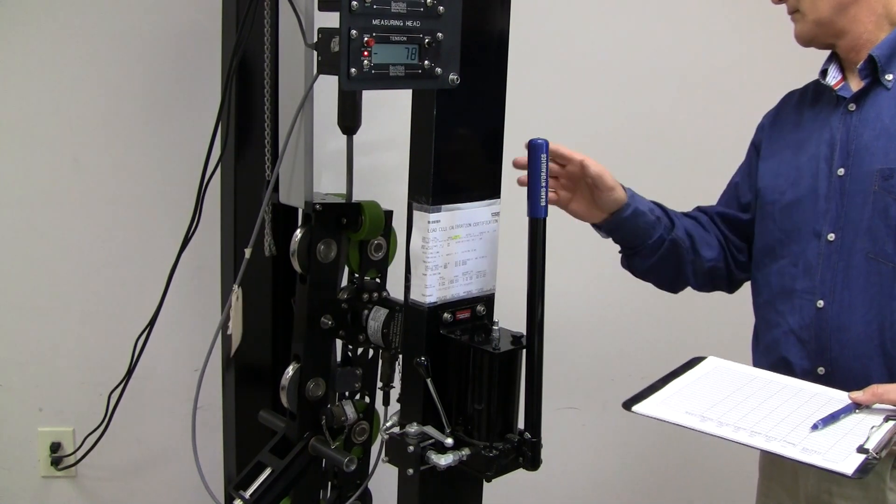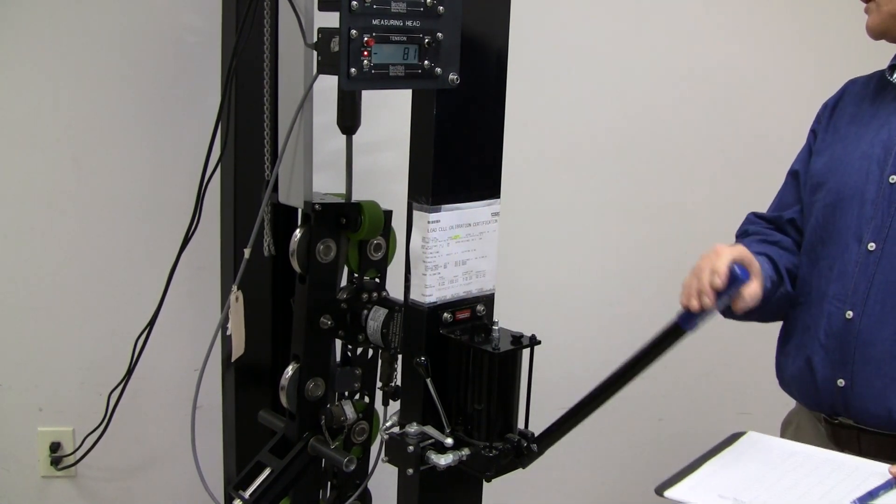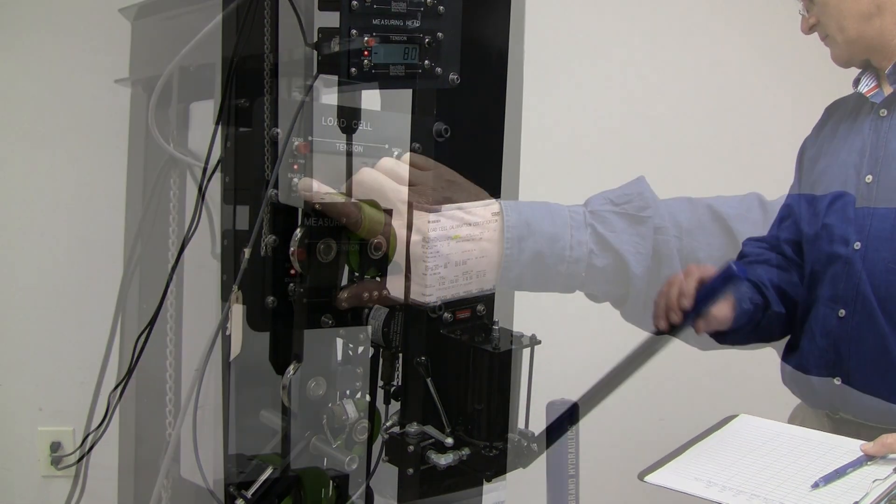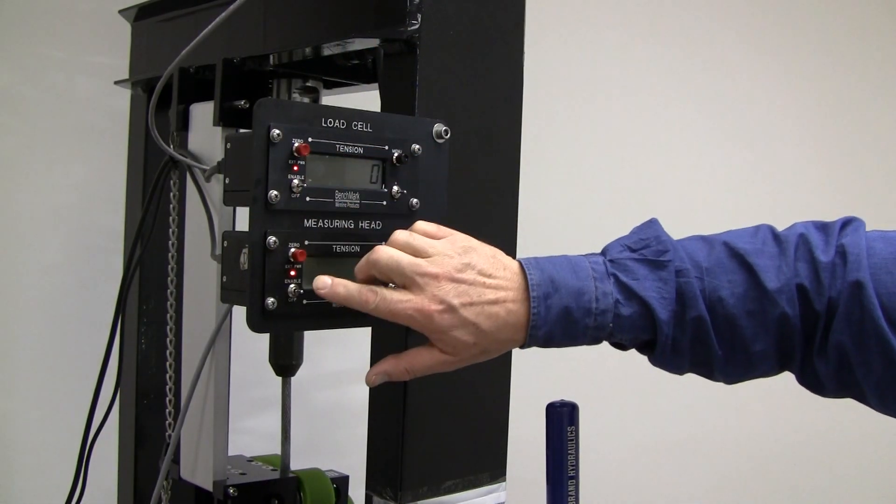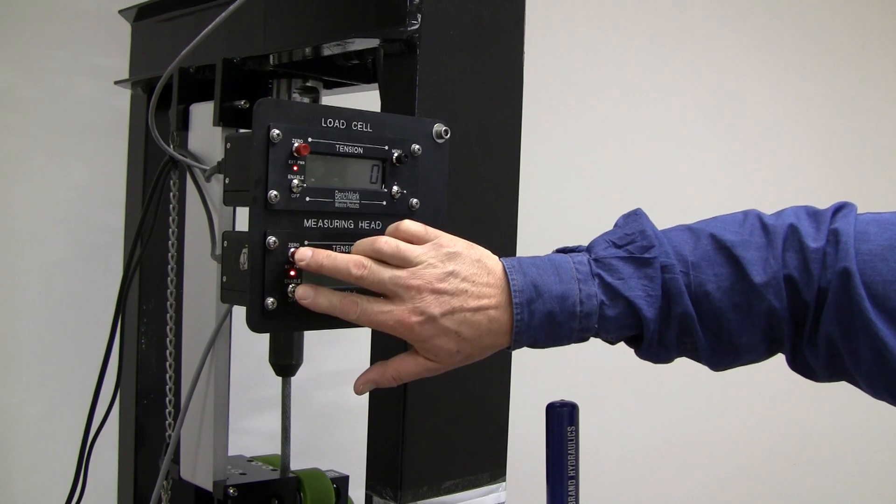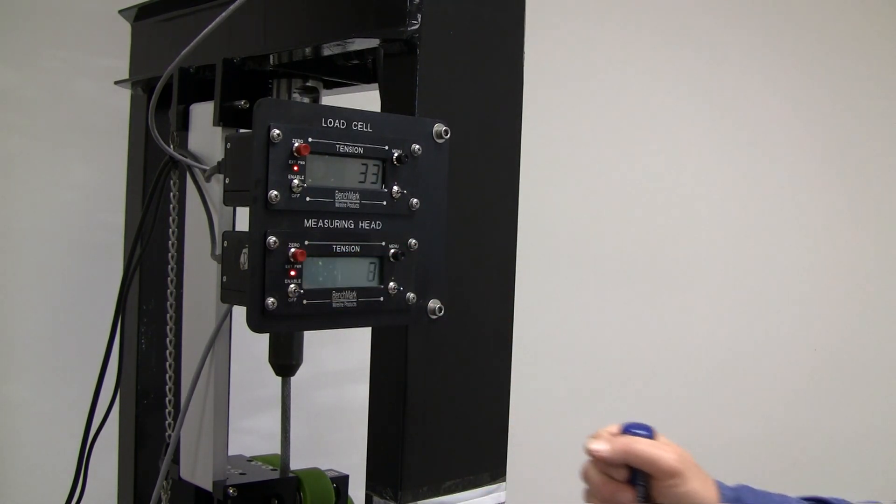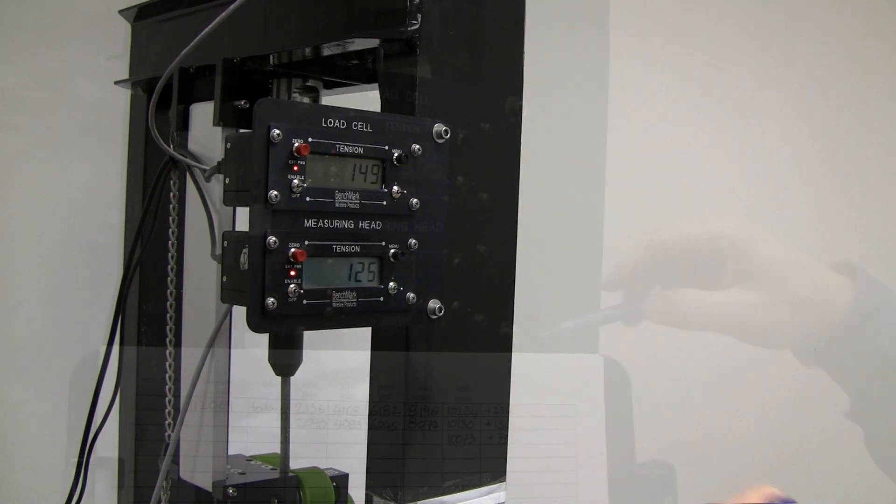Pump up the system slightly to get the reading on the top panel to about zero. Zero out both panels as before and repeat the same multi-step tension testing procedure and record the readings. Do the same for the third cycle which tests only two points, zero and 10,000.